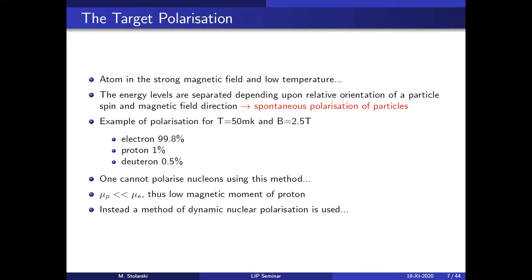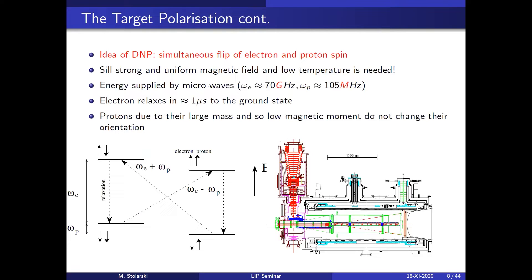About target polarization: in a strong magnetic field at low temperature, energy levels separate and you can achieve polarization. We cool the target down to 50 millikelvin and apply a 2.5 Tesla magnetic field. Electrons become almost fully polarized at nearly 100%, but proton polarization is only about 1% by this thermal method, because the magnetic moment of the proton is much smaller due to its larger mass.